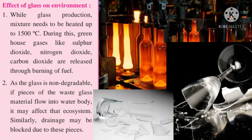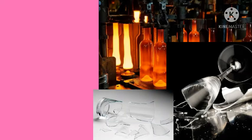Effect of Glass on Environment: During glass production, the mixture needs to be heated up to 1500 degrees C. During this process, greenhouse gases like sulfur dioxide, nitrogen dioxide, and carbon dioxide are released through the burning of fuel. As glass is non-degradable, if pieces of waste glass flow into a water body, they may affect that ecosystem. Similarly, drainage may be blocked due to these pieces.